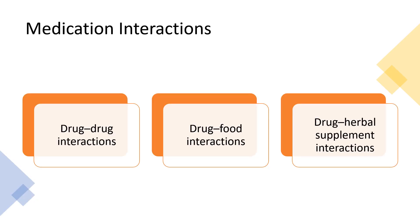Drug-to-drug interactions occur any time someone is prescribed more than one medication. This will cause the effects of one medication to intensify, or it can decrease the effects of another medication. The results will depend on the medication prescribed, the pharmacodynamics, and the effects on the pharmacokinetics. There are also drug-to-food interactions.